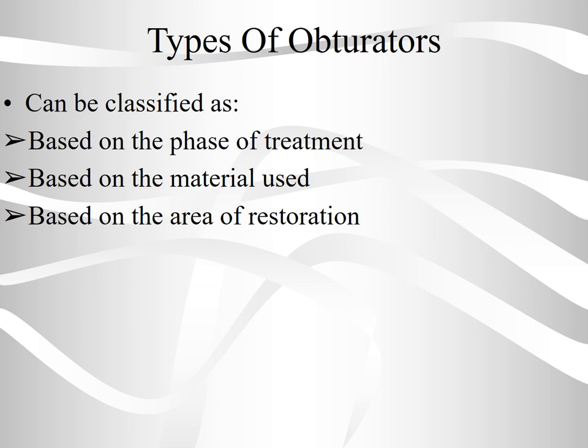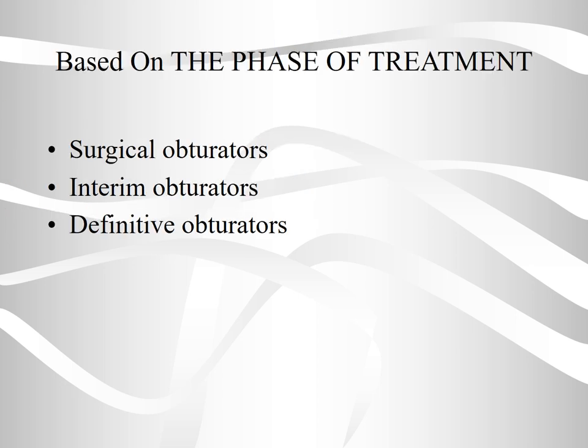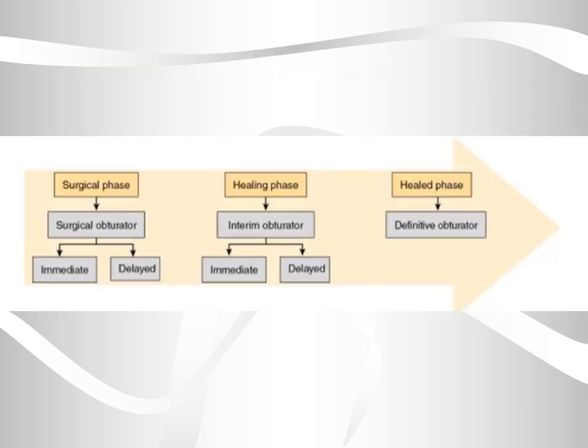Types of obturators can be classified based on phase of treatment, based on material used, and based on the area of obturation. Based on the phase of treatment, it can be divided into three phases: the surgical phase, the healing phase, and the healed phase.